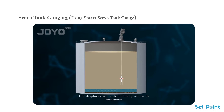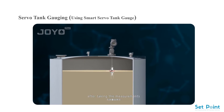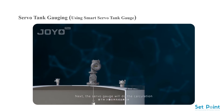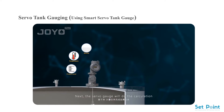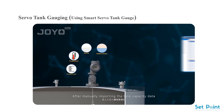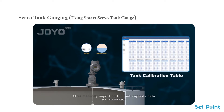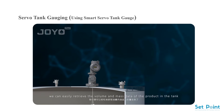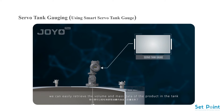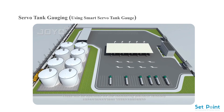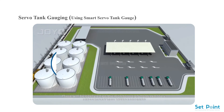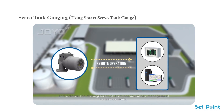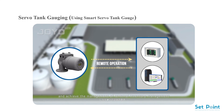The displacer automatically returns to and keeps floating on the surface of the product after taking the measurements. Next, the servo gauge performs the calculation. After manually importing the tank capacity data, we can easily retrieve the volume and mass data of the product in the tank. These are operated on the monitoring platform remotely to achieve terminal inventory management.